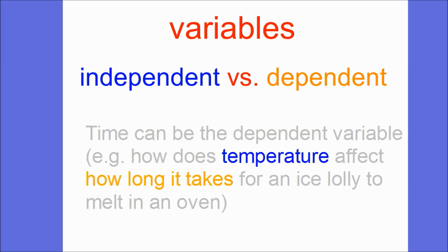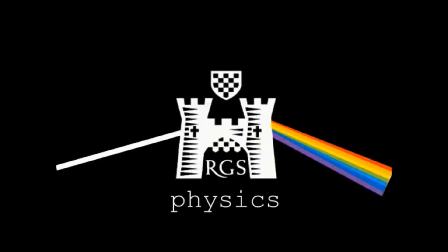Time isn't always the independent variable though. For example, how long does it take for an ice lolly to melt in an oven based on the temperature? Here, the temperature is the thing you are changing — that's the independent variable — and how long the ice lolly takes to melt depends on the temperature, making it the dependent variable.